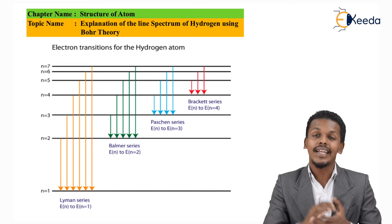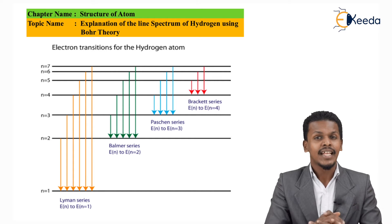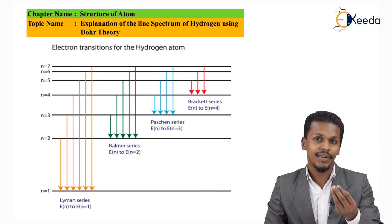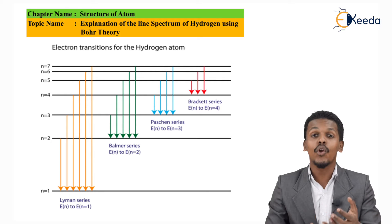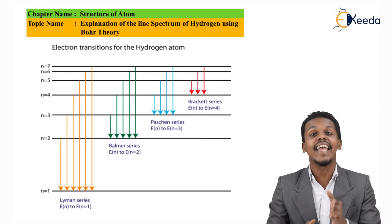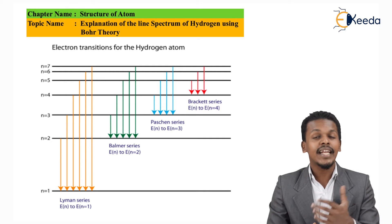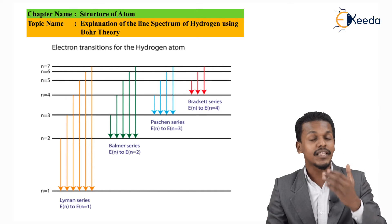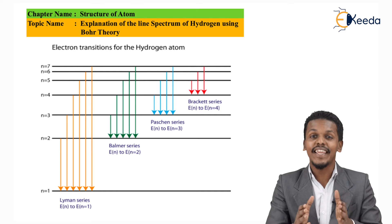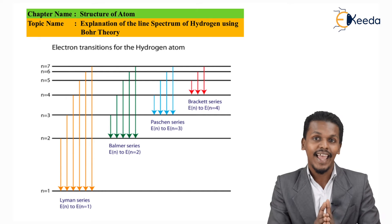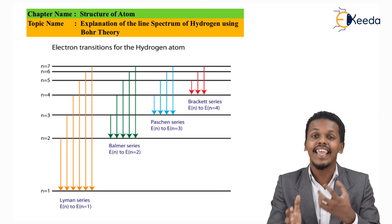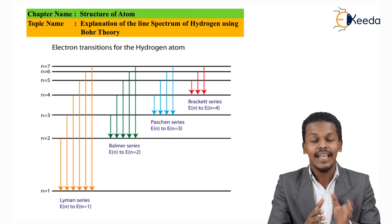Let me talk about the Lyman series first. In this case, the electron jumps from a higher orbital to the lower orbital, but the lower orbital is n = 1, or Nf = 1. So the electron jumps from the second orbit to the first, from the third to the first, from the fourth to the first. This collection of transitions gives a series known as the Lyman series.